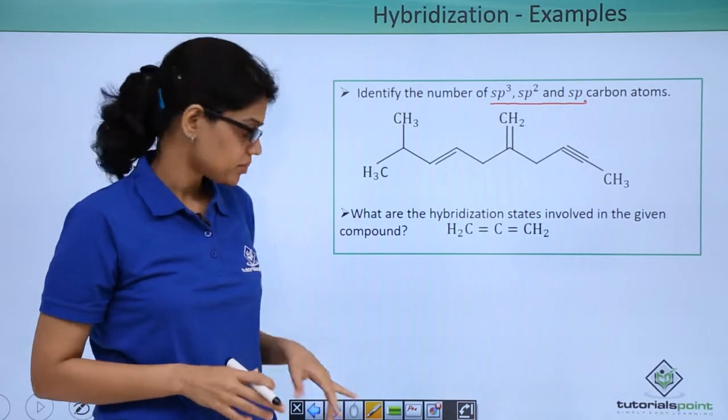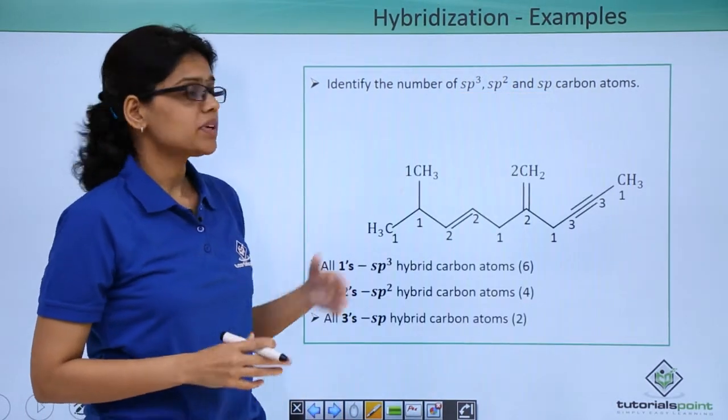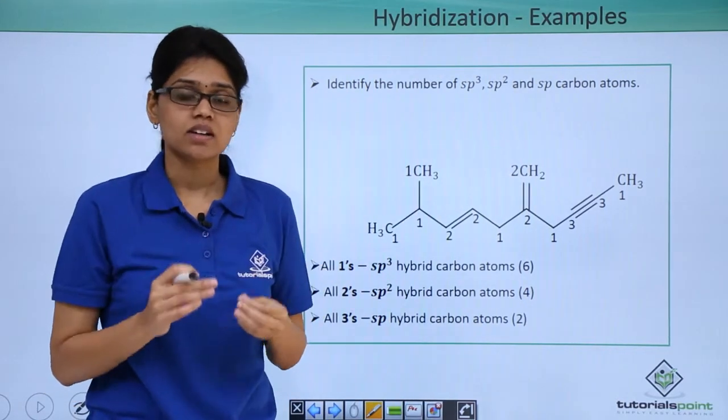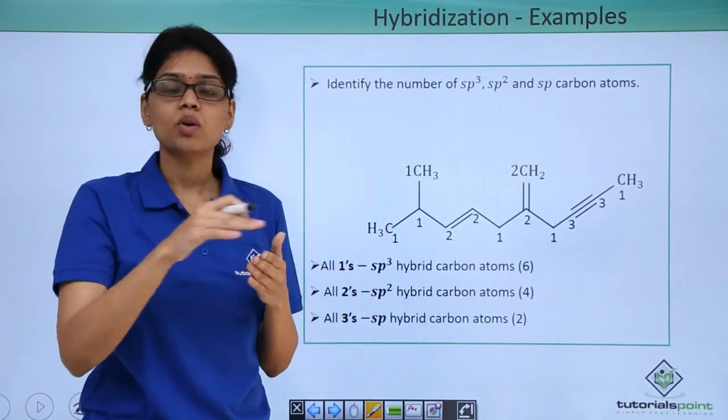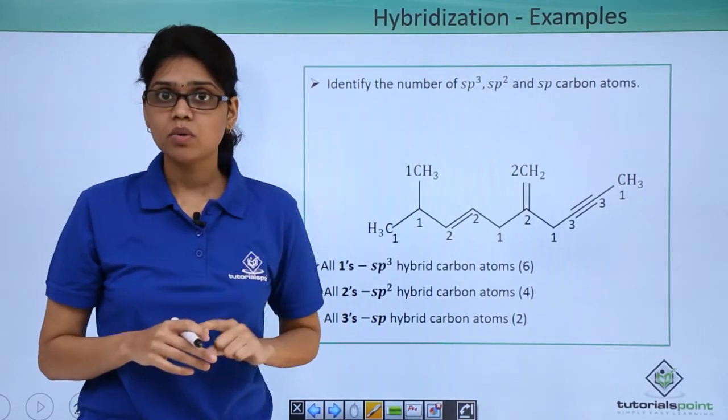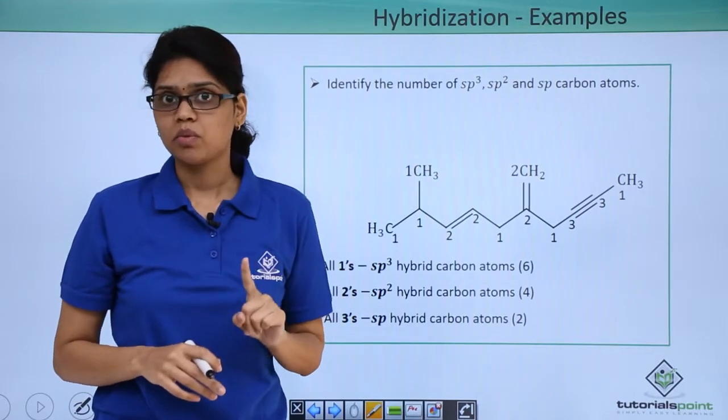Let's try to solve this problem. So in this particular problem you can see that sp3 hybridization is saturated which means carbon has 4 bonds actually bonded. And sp2 means we have 1 double bond and sp means we have 1 triple bond.